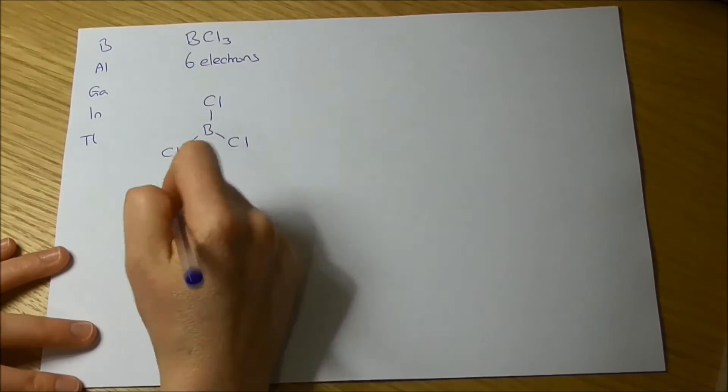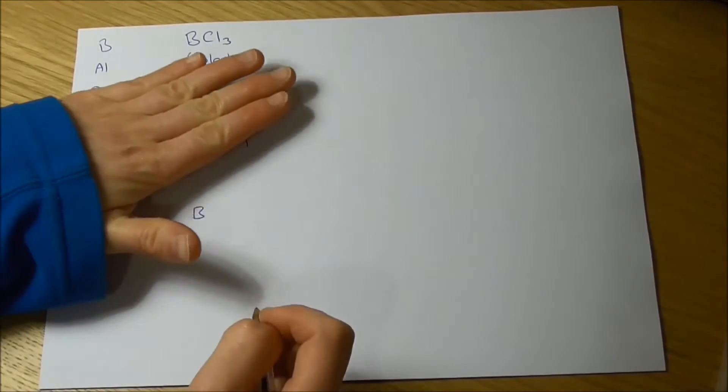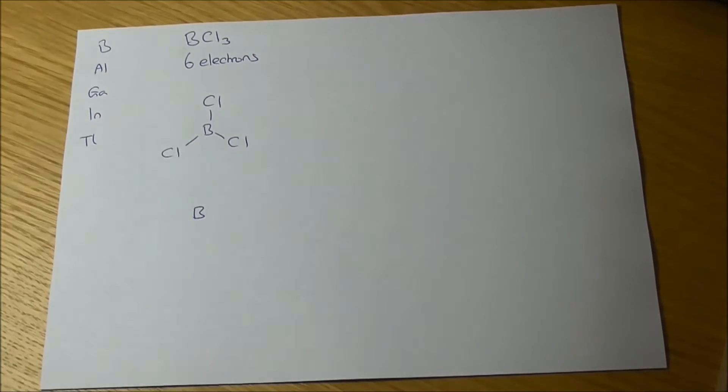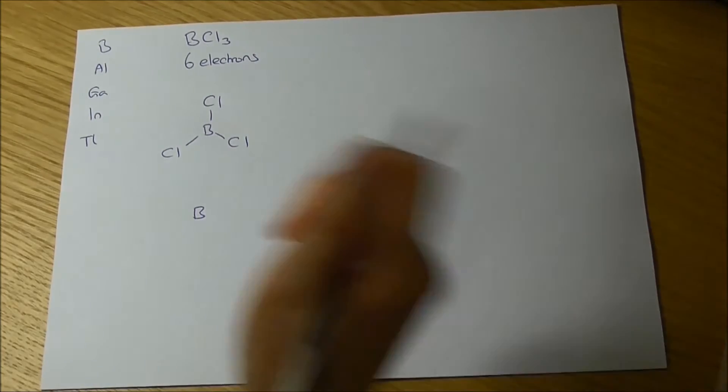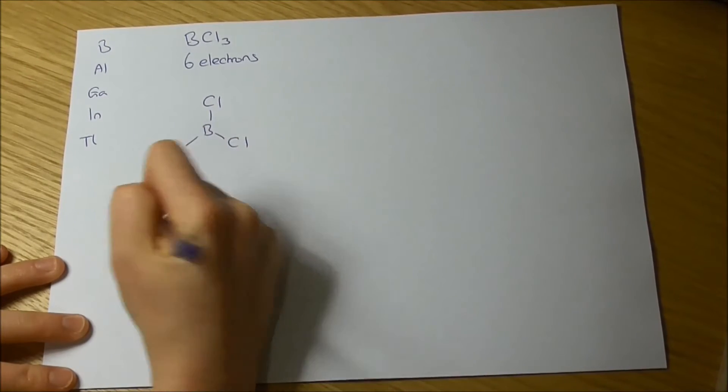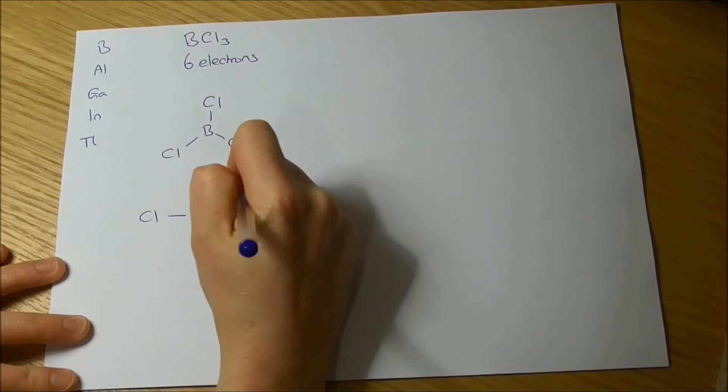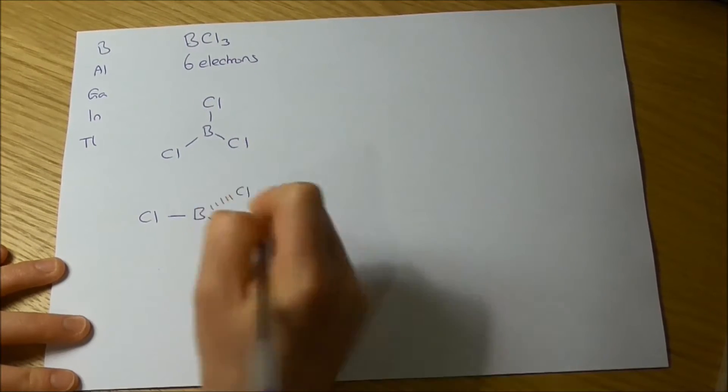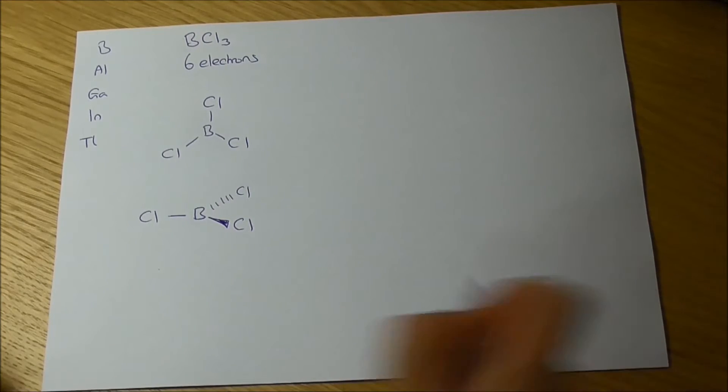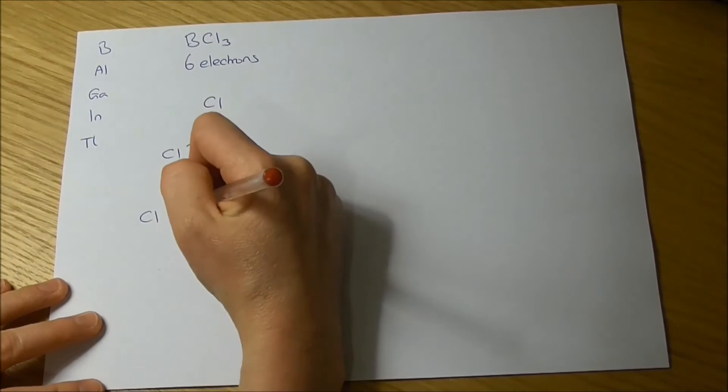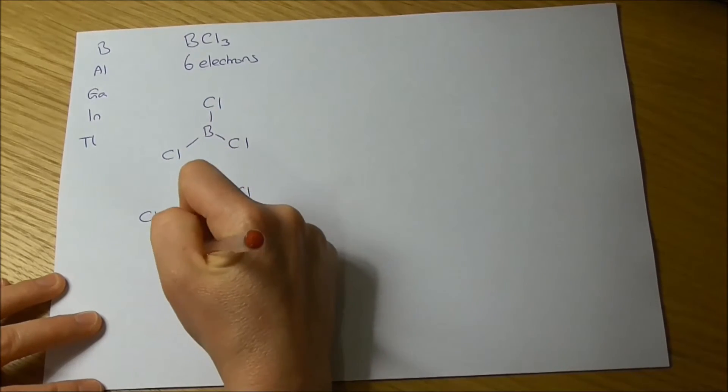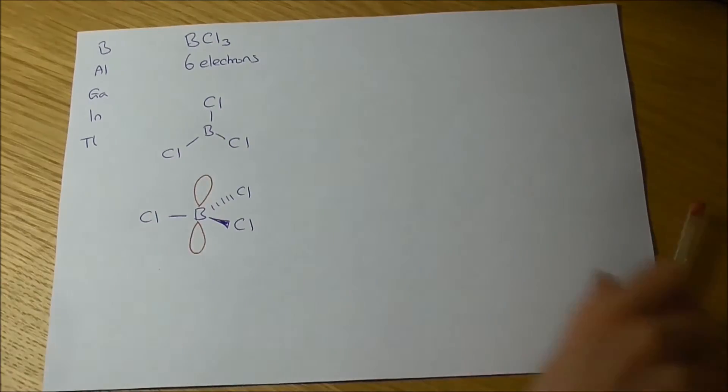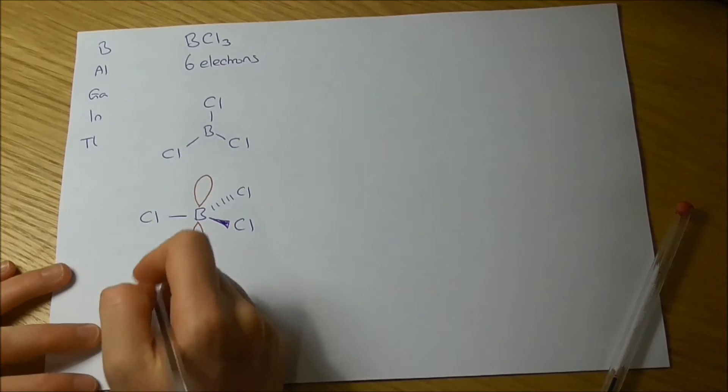Another way of representing this is if we consider the plane of the molecule to be perpendicular to the plane of the paper. So our boron trichloride looks like this. And the advantage of representing it like this is we can then show the empty p-orbital that's sitting above and below the plane of the molecule.